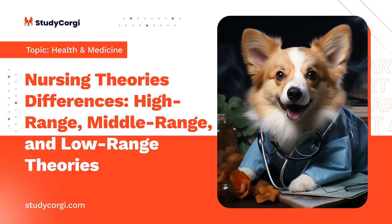The major concepts of high range nursing theories are personhood, client health, environment, and autonomy. Middle range nursing theories aim at self-help, chronic diseases, client health behavior, and self-efficacy. Their main purposes are to demonstrate processes that improve the quality of life and show the phases of chronic diseases.